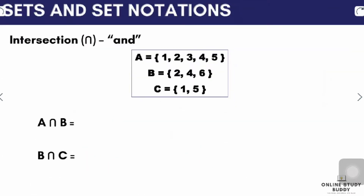Next is intersection. The intersection is defined as a set that contains the elements that can be found in both set X and set Y. The symbol used is an inverted U. So the intersection of set A and set B is a set that contains 2 and 4, because those are the only common elements. For set B intersected with set C, they have no common elements, so the answer is a null set or an empty set, represented with two empty curly brackets.